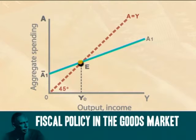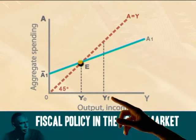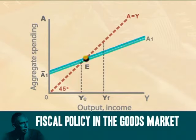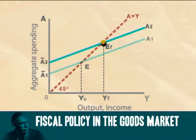Total spending is equal to the level of output and income, but at the moment this is lower than the level of full employment. The economy is experiencing unemployment, and the cause of this unemployment is inadequate total spending. Under these circumstances, government can use fiscal policy to stimulate spending in an effort to increase production that creates employment.